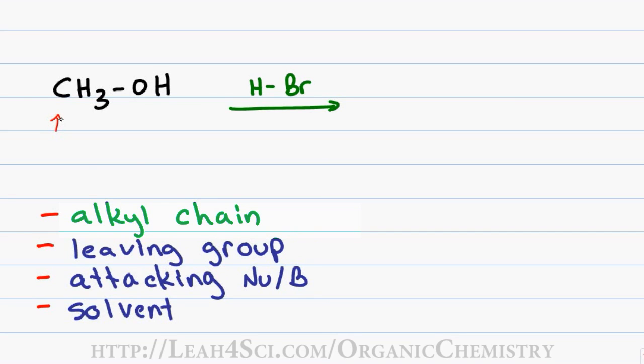Looking at the alkyl chain, we have a CH3 bound to an OH meaning we have our leaving group sitting on a methyl. Since methyl cannot form a stable carbocation, we rule out the one type reactions meaning SN1 and E1.